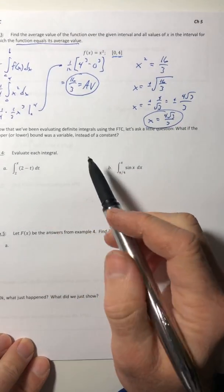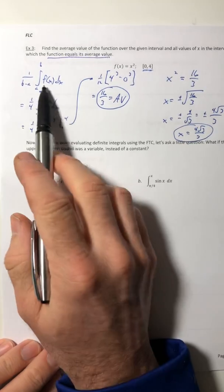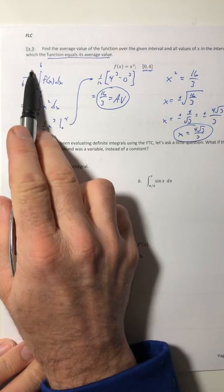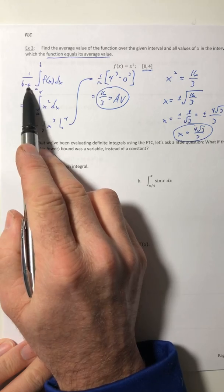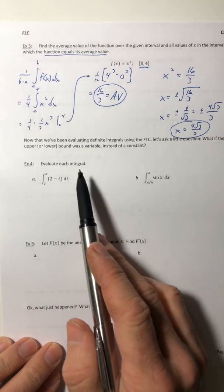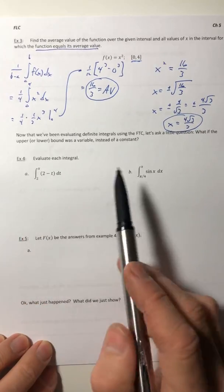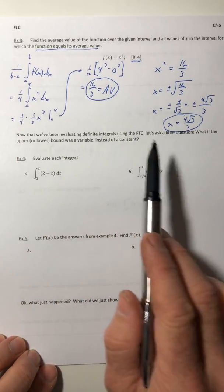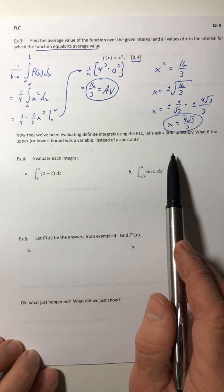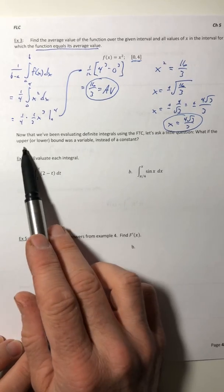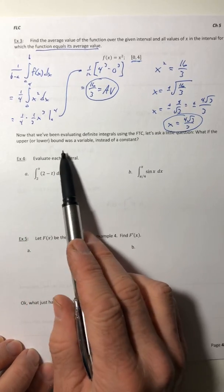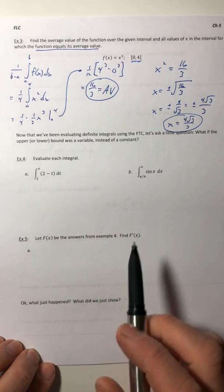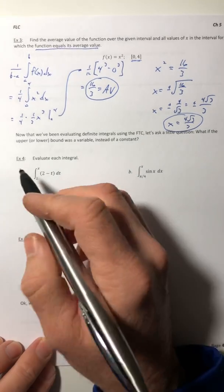All right. So that's how you find the average value. It's not too bad. Because if you can integrate, you can do this because you just have this extra little fraction out here that's pretty simple. So now that we've been evaluating these definite integrals using that shortcut, that fundamental theorem of calculus, let's ask a little question. What if the upper, or sometimes the lower bound, was a variable instead of a constant?